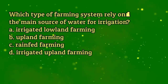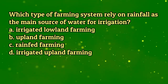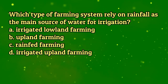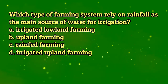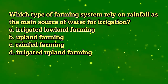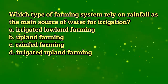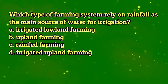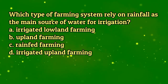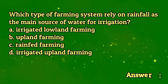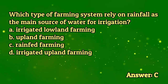Which type of farming system relies on rainfall as the main source of water for irrigation? A. Irrigated lowland farming. B. Upland farming. C. Rain-fed farming. D. Irrigated upland farming. The answer is letter C.